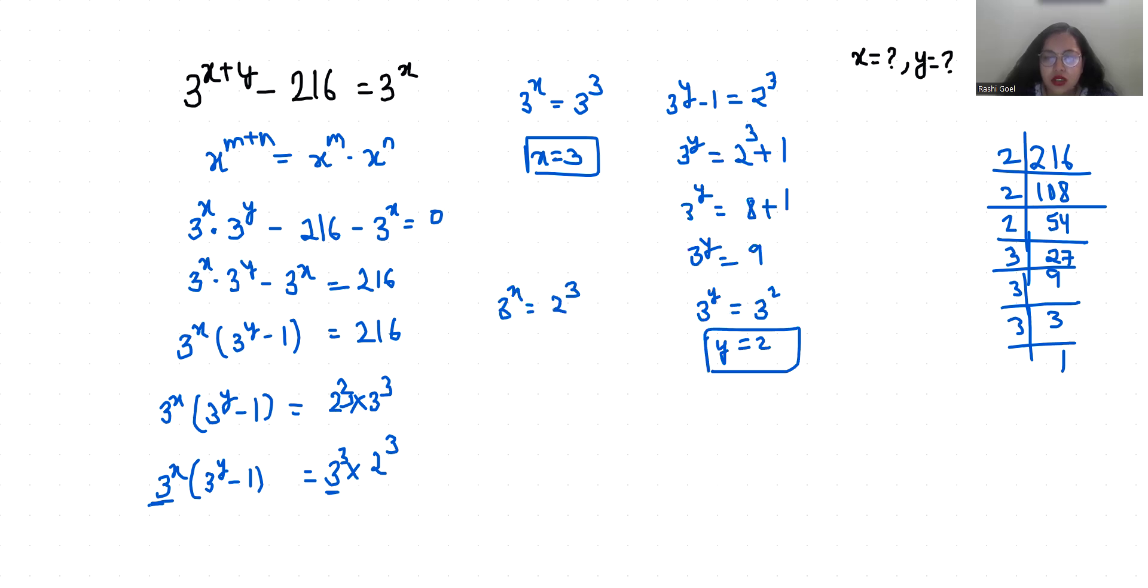So this gives us complex solution. So we will not accept this. So the value of x is 3 and y is 2.